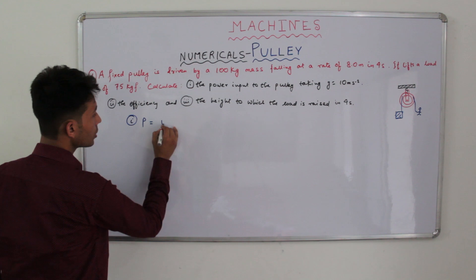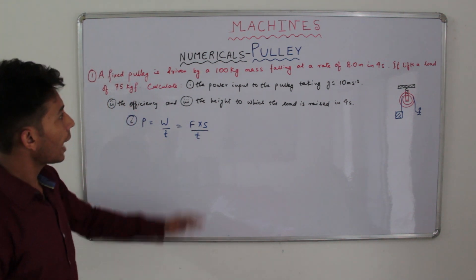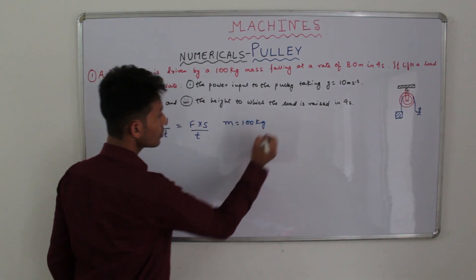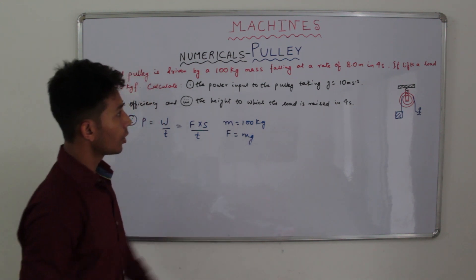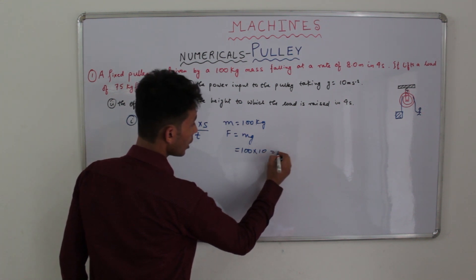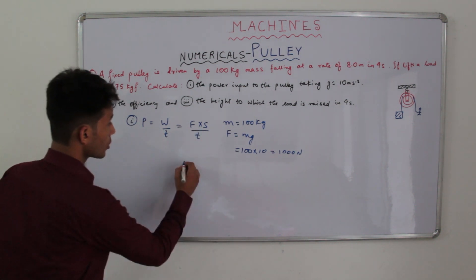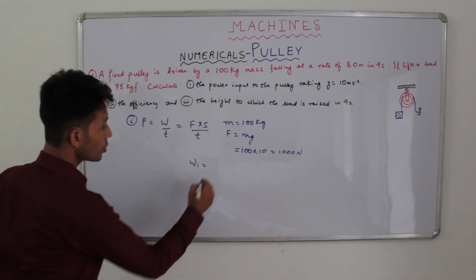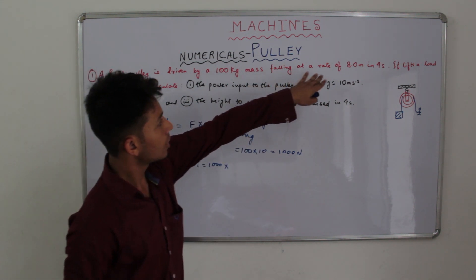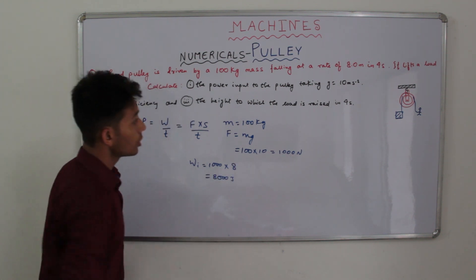We know power equals work done divided by time taken, and work done equals force into displacement. We have mass equals 100 kilogram. We know force equals mg, and we've been asked to take g as 10. So the force equals 100 into 10 equals 1000 Newton. Work input equals force into displacement, which is 1000 Newton into 8 meters equals 8000 Joules. This is our work input.